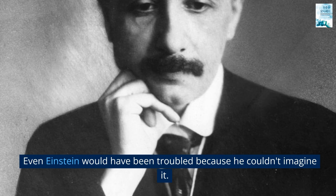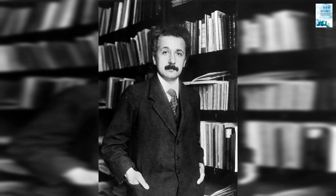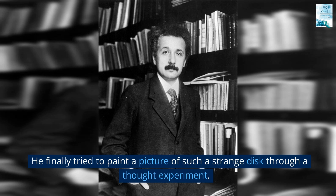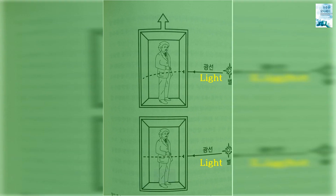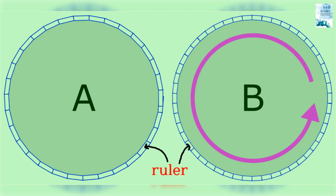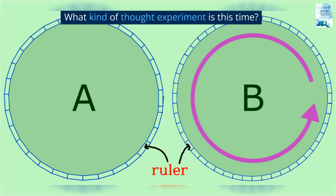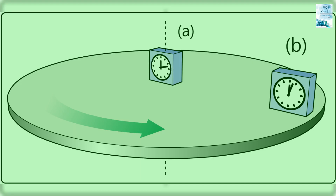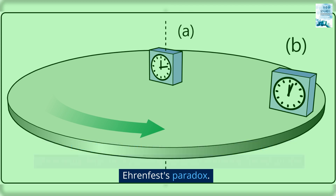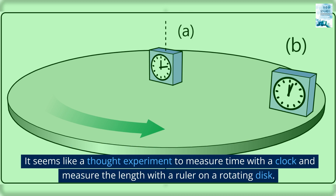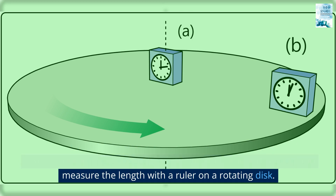Even Einstein would have been troubled because he couldn't imagine it. He finally tried to paint a picture of such a strange disc through a thought experiment. What kind of thought experiment is this time? It is a thought experiment named 'Behavior of Clocks and Measuring Rods on a Rotating Body of Reference,' based on the Ehrenfest's paradox. It seems like a thought experiment to measure time with a clock and measure the length with a ruler on a rotating disc. That's right.